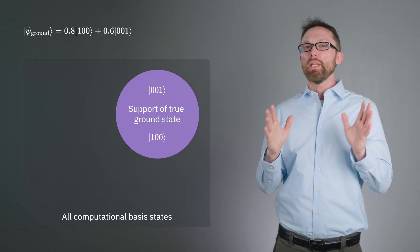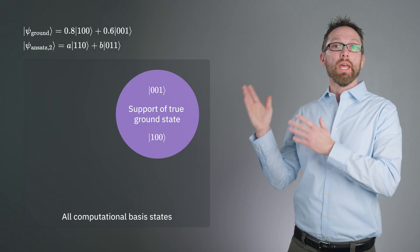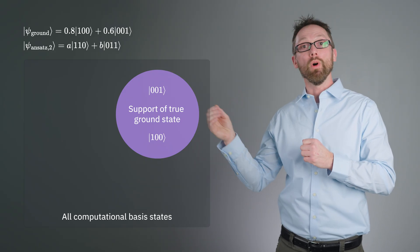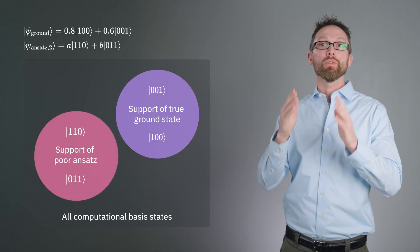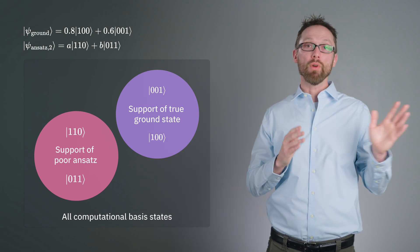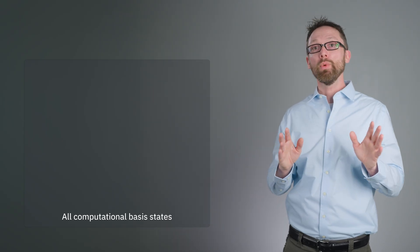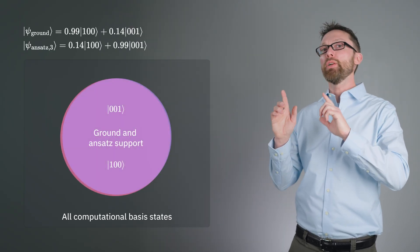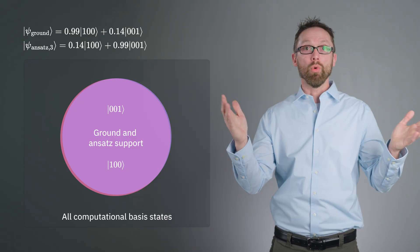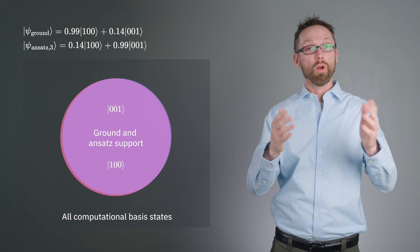Now imagine we had instead chosen an ansatz psi_ansatz_2 = a * |110⟩ + b * |011⟩. This has support {|110⟩, |011⟩}, which has no overlap with the support of the ground state. This is a bad ansatz. Note that we do not necessarily require that the ansatz be a good approximation of the ground state. The ansatz could have much larger support, or the coefficients could be very different from those of the true ground state, and still work well.